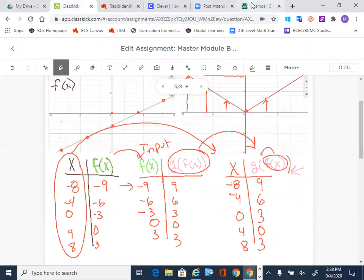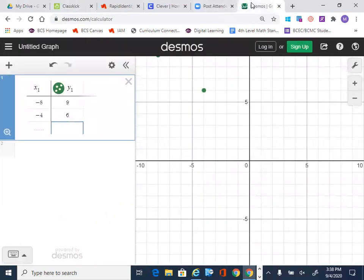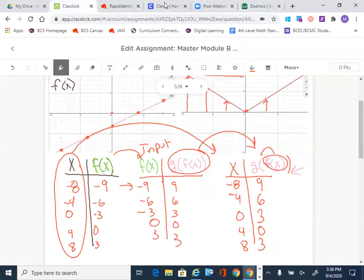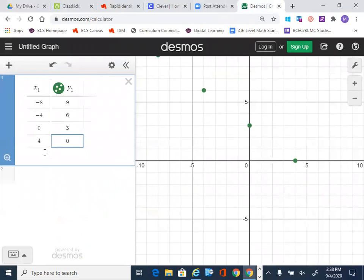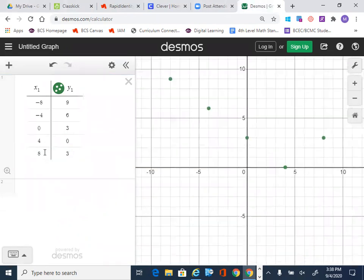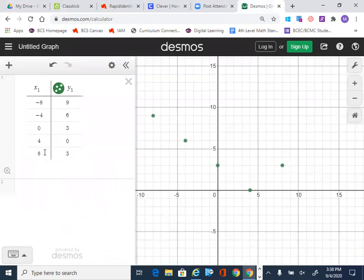0, 3, 4, 0. And finally, it looks like 8, 3. 8, 3. And as we look at that, we can start to see the formation of another absolute value graph. Now, it is not a perfect approximation just off the points, but we can see that it looks something probably along the lines of this.